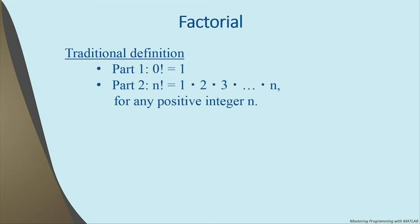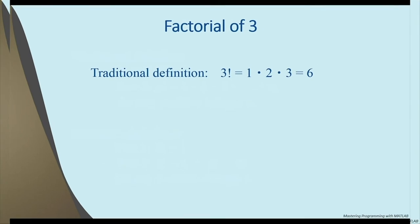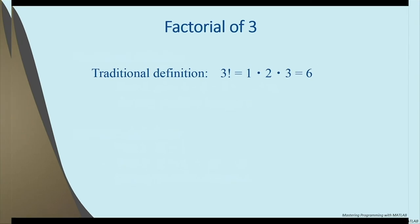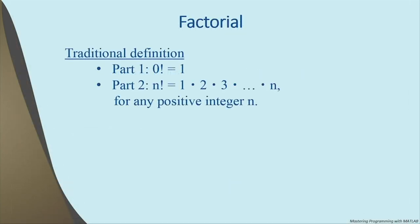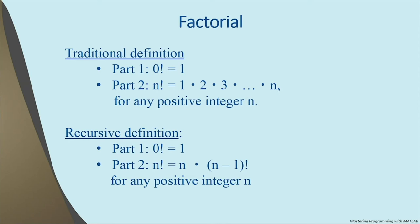Here you can see the traditional definition of factorial. It has two parts. Part one says that the factorial of zero is one. Part two says that the factorial of a positive integer n is equal to the product of all the integers from one to n. For example, three factorial equals one times two times three, which is six. Now let's look at the recursive definition. It also has two parts: part one also says the factorial of zero is one. Part two is different — it says that the factorial of any positive integer n equals n multiplied times the factorial of n minus one. And that's the recursion.